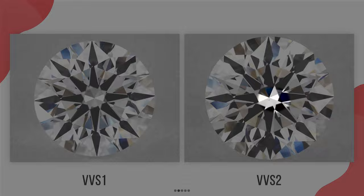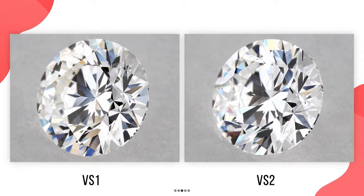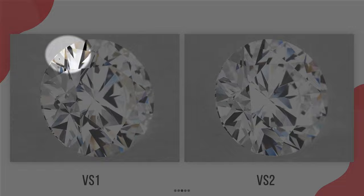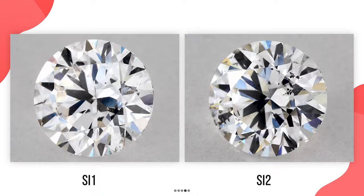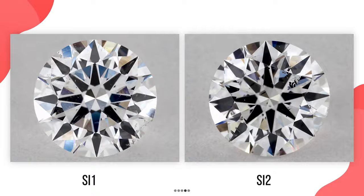The next group is VS1 and VS2 diamonds, which stand for Very Slightly Included level 1 and level 2. VS1 diamonds have minor inclusions that cannot be seen without 10x magnification. VS2 diamonds have inclusions that are easily visible under 10x magnification. Below that is SI1 and SI2, which stand for Slightly Included. On level 1, inclusions are sometimes visible even to the naked eye. On level 2, inclusions are generally visible to the naked eye.